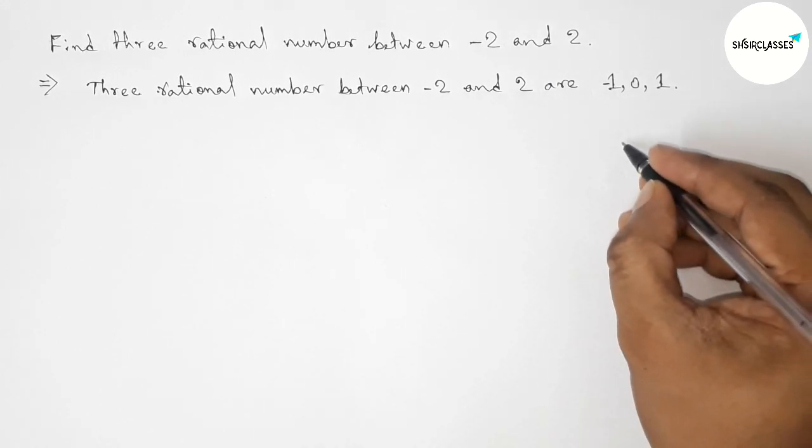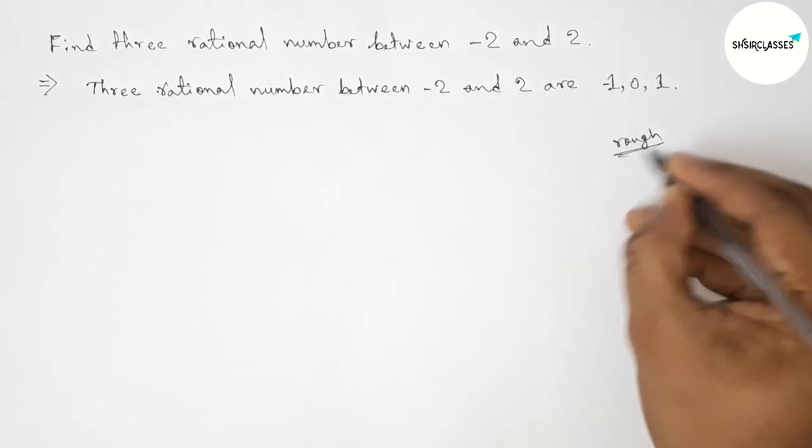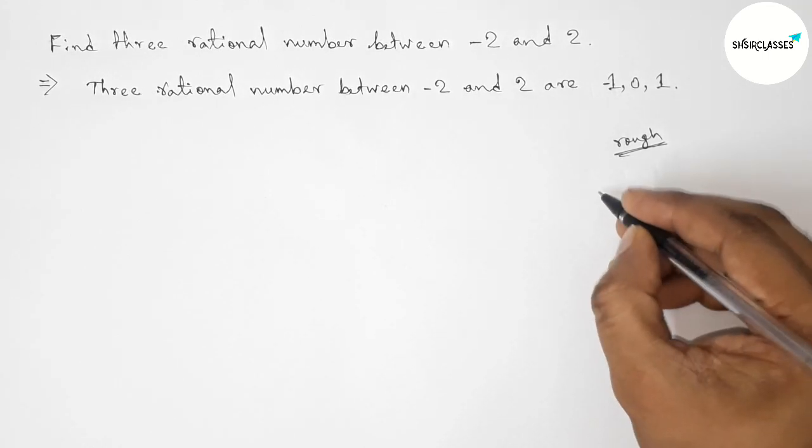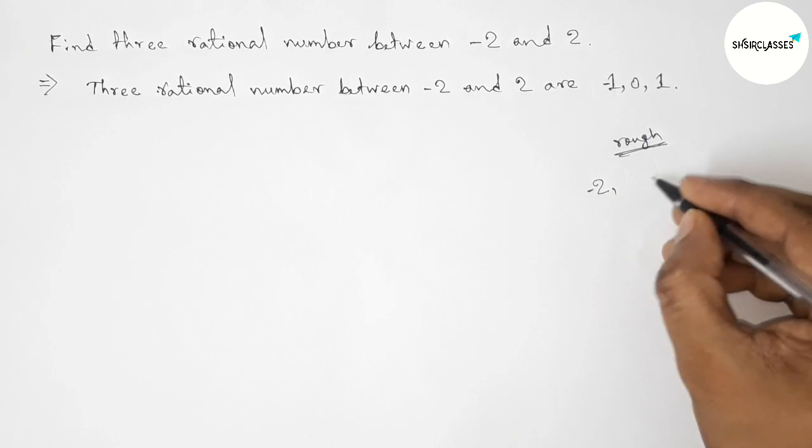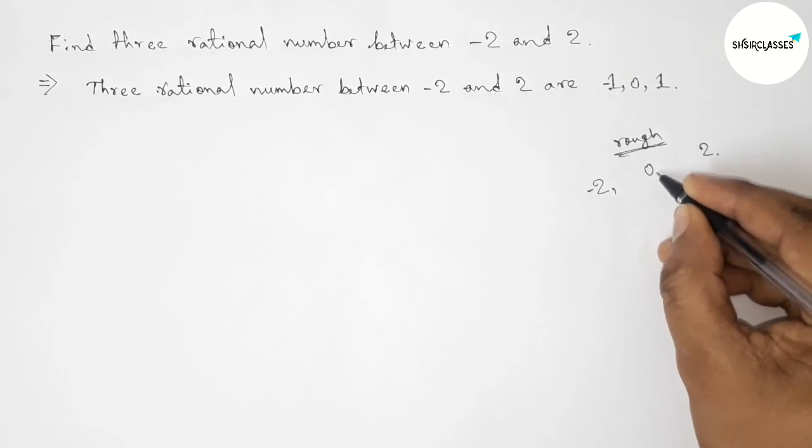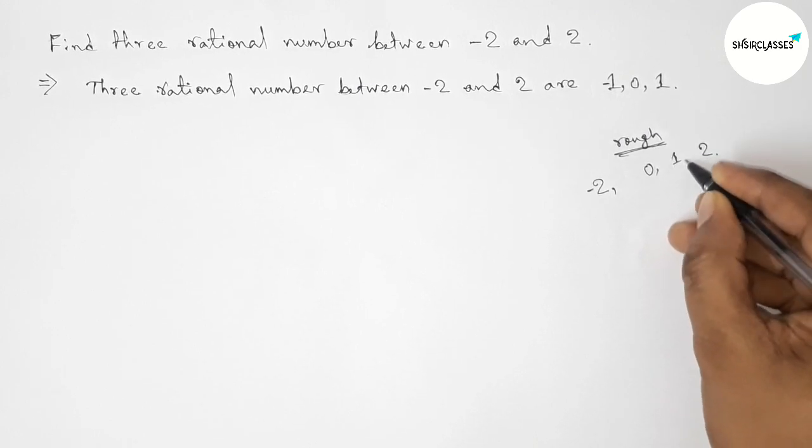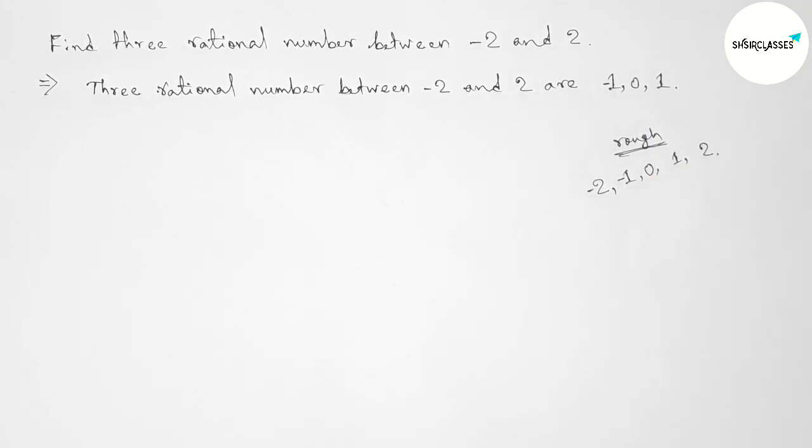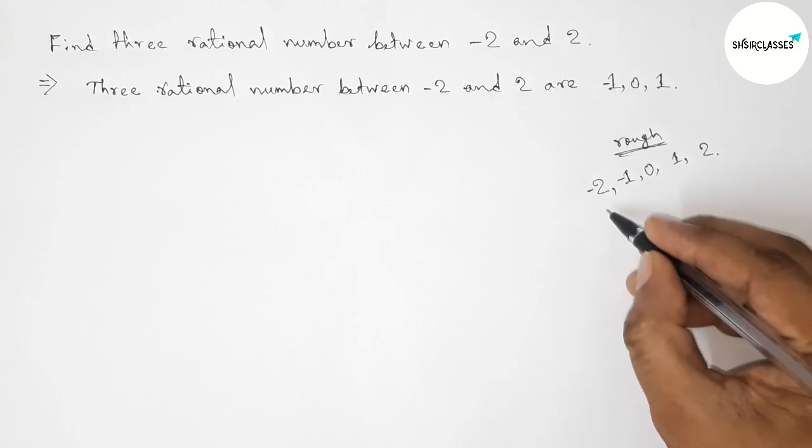Now roughly discussing here, between minus two and two we can write here three. So first taking zero, and this side plus one, and this side minus one. So these are three rational numbers.